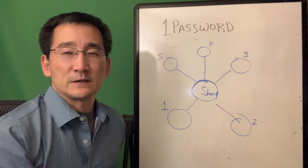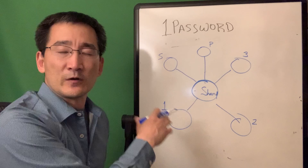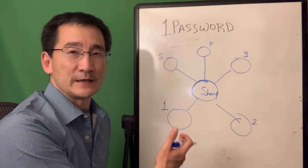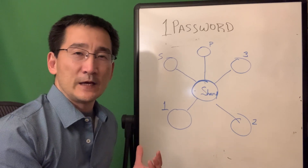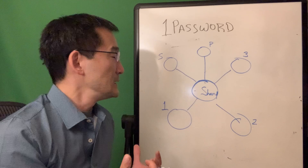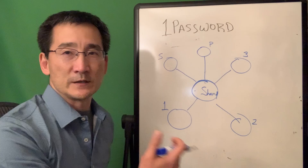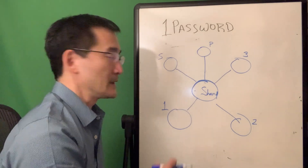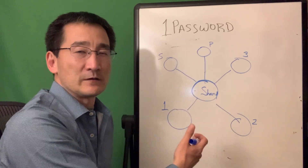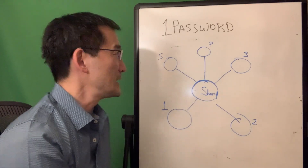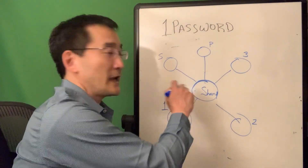Once everyone's set up and confirmed, they all get access to the shared vault. The shared vault allows you or anybody to put a password or other document in there and everyone else can see it. There are different levels of accessibility: view only, edit, and full capability, which means you can administer the vault. The principle is you can add and share, and that's the purpose of the shared vault. The owner can change that access.